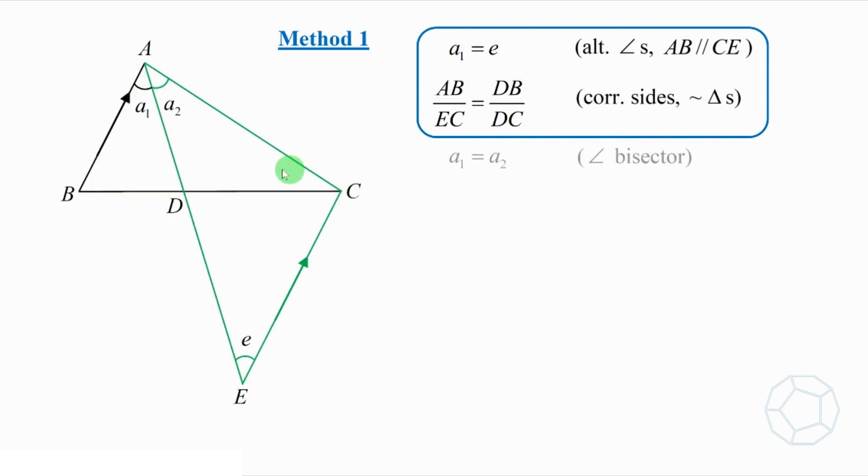We'll have A1 is equal to A2 because AD is the angle bisector. Just now, we also got A1 is equal to E because they are the alternate angles of parallel lines. Combining the two results together, we'll have A2 is equal to E. Therefore, EC is equal to AC, and the reason is sides opposite equal angles.